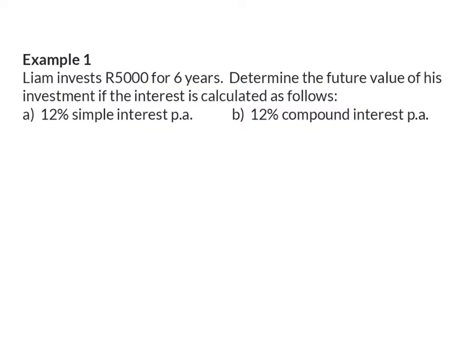Firstly, they say that Liam invests 5,000 rand, so that will be his starting value for the account. And this is invested for six years, which will be our number of periods. Here we are asked to determine the future value or the final amount for this account, which will be our A-value.